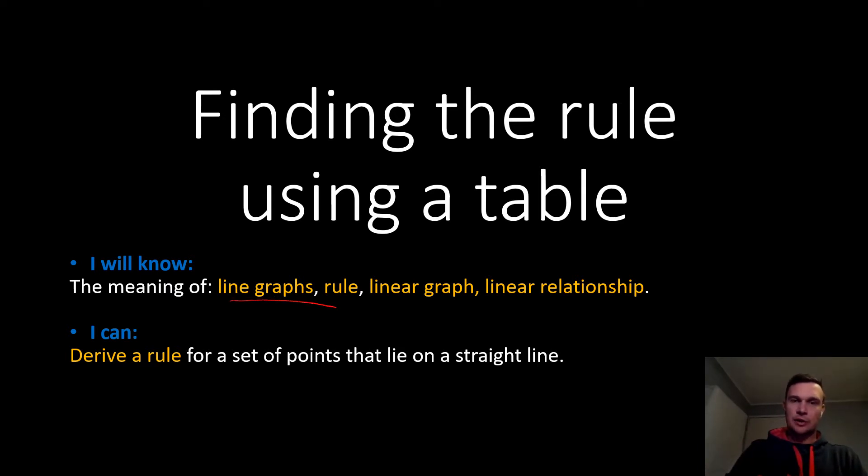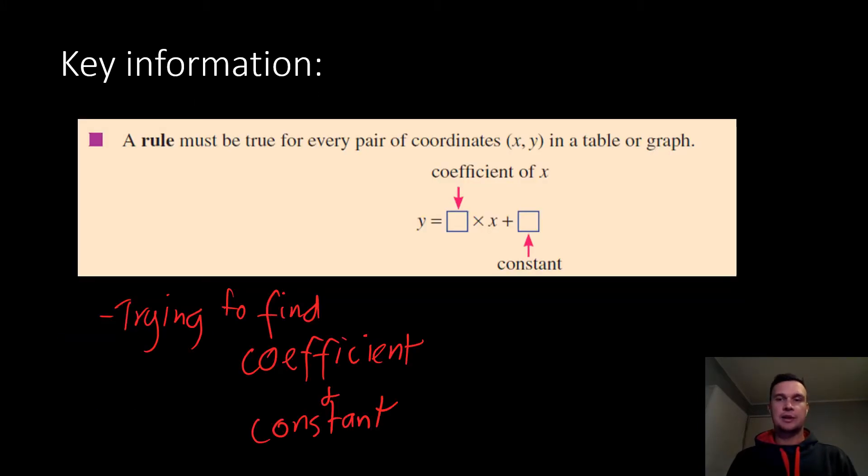So last lesson we looked at these things, so we hopefully know what they are. But in this one, it's more about what you can do - deriving a rule from a set of points that lie in a straight line. So there's some key information that you need to make sure you know first, and these are basically the things that we're looking at.